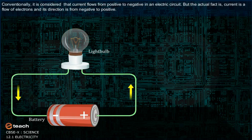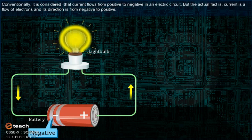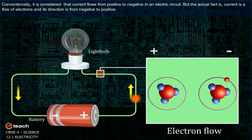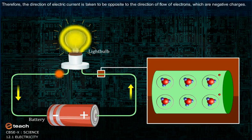Conventionally, it is considered that current flows from positive to negative in an electric circuit. But the actual fact is, current is a flow of electrons and its direction is from negative to positive. Therefore, the direction of electric current is taken as opposite to the direction of flow of electrons, which are negative charges.